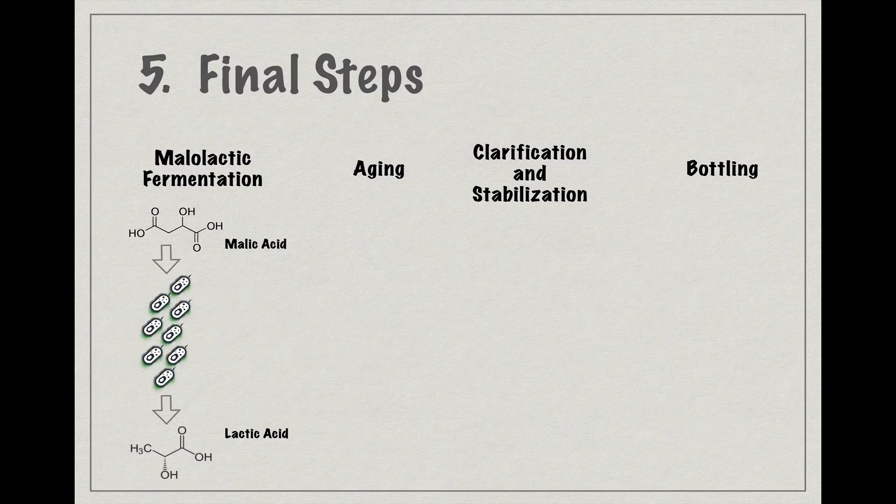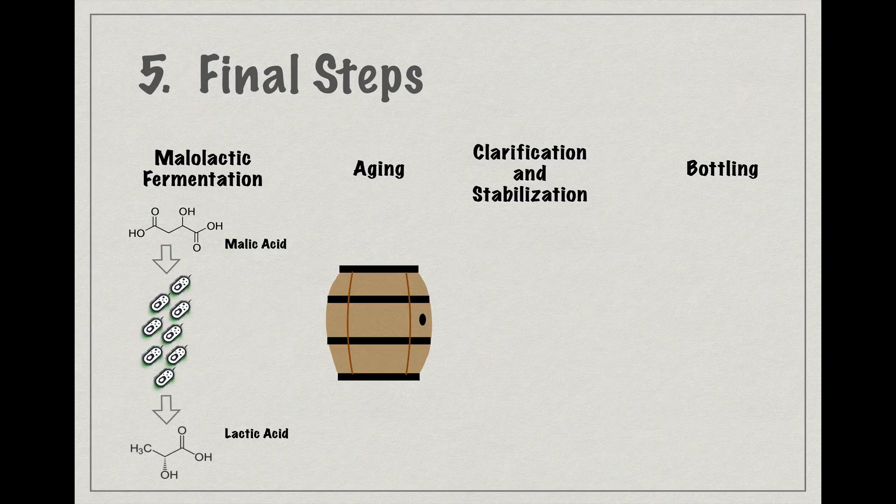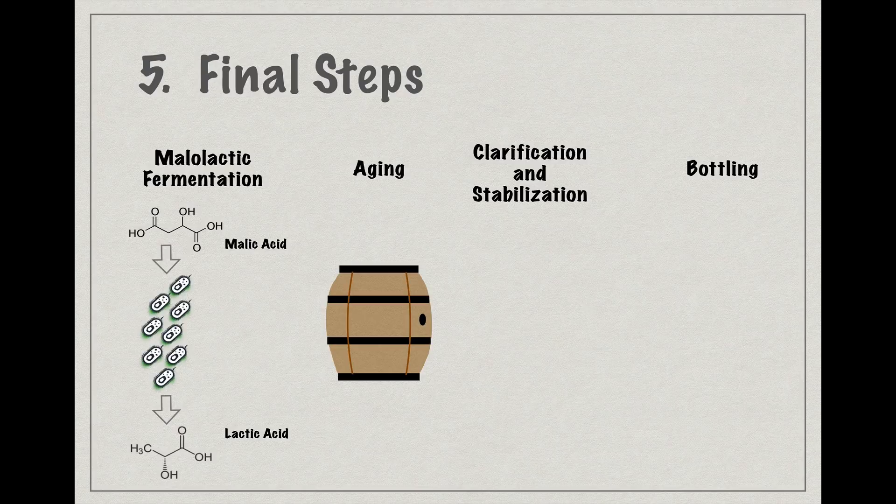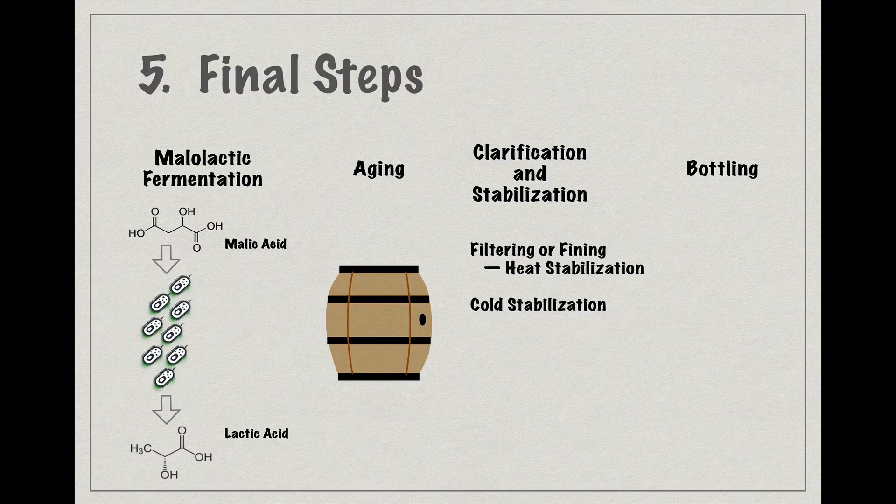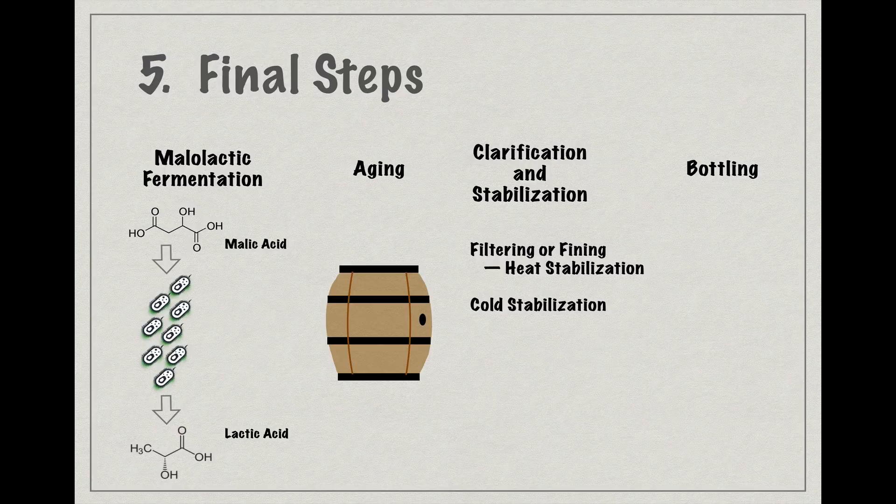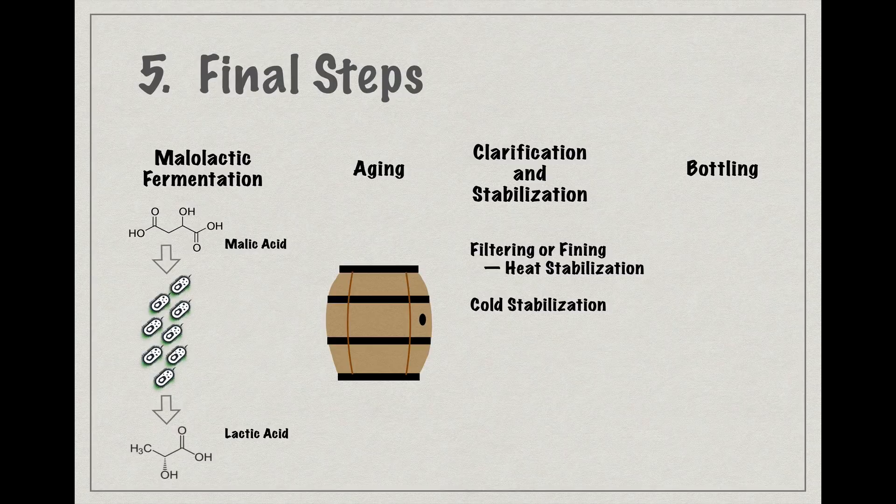Aging gives the various components in the wine time to integrate, and most winemakers will want to give their reds some time to age, which may take place in oak barrels or in some other medium. By this stage in the process, most of the gross particulate matter, like skin and pulp, is gone from the wine, but there are still lots of smaller particles left in solution. Over time, most of these will settle to the bottom of whatever vessel the wine is being aged in, and then the wine can be racked off of it.